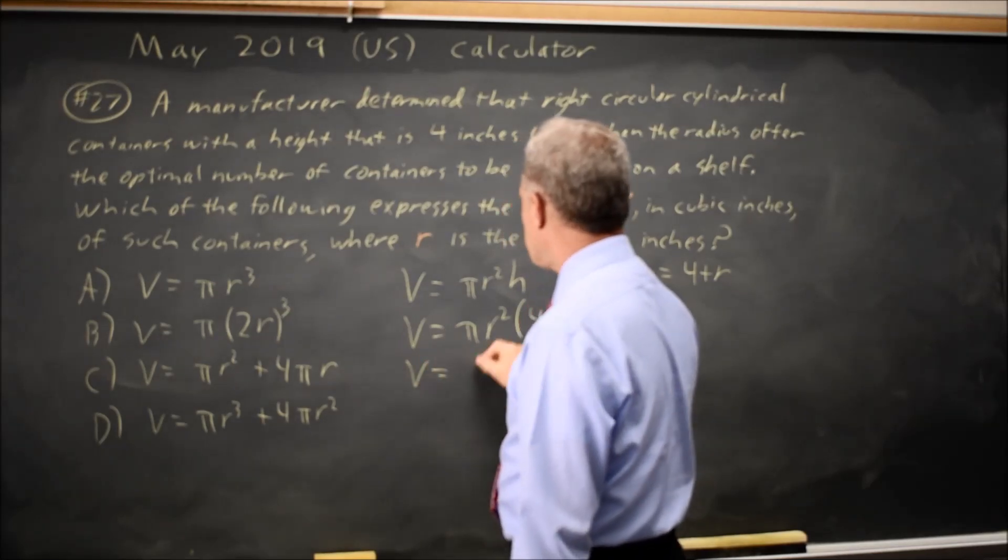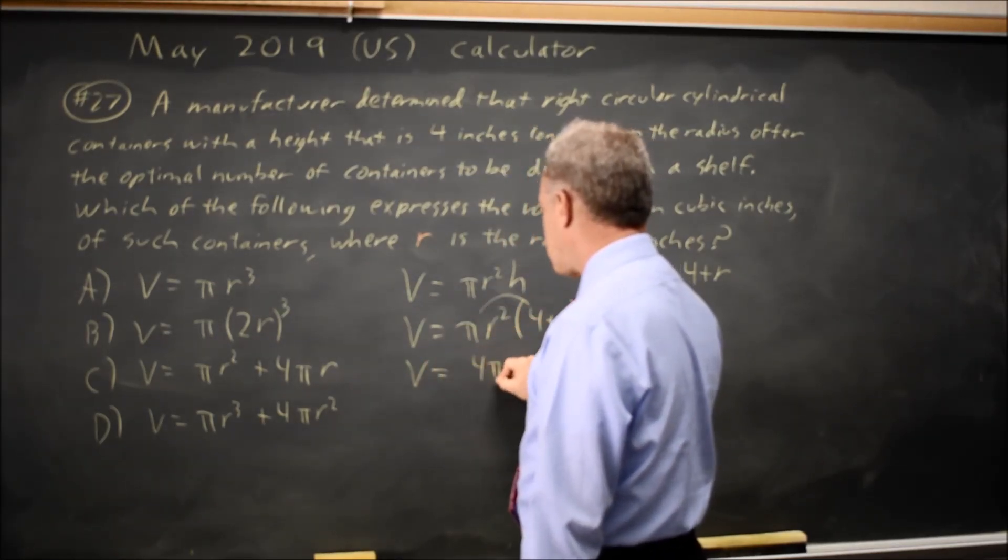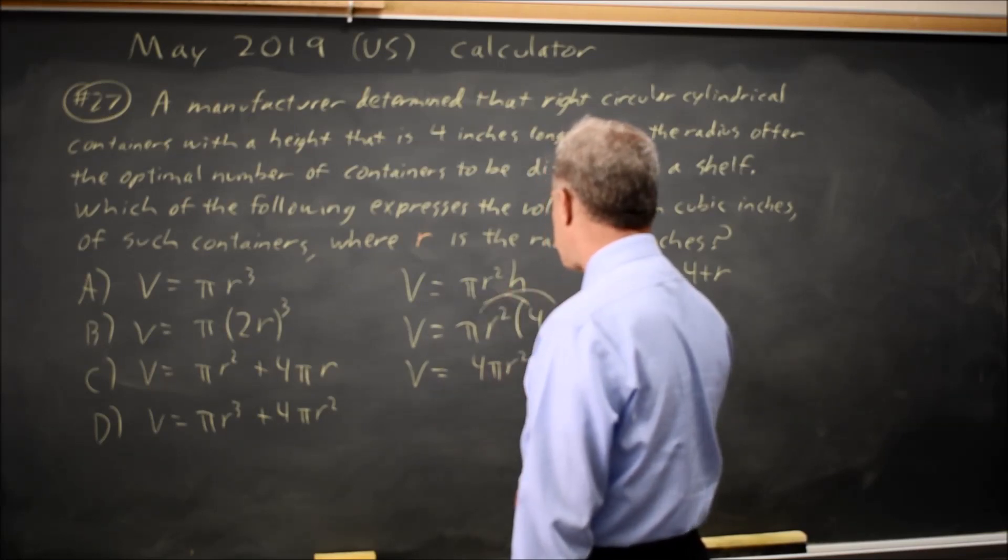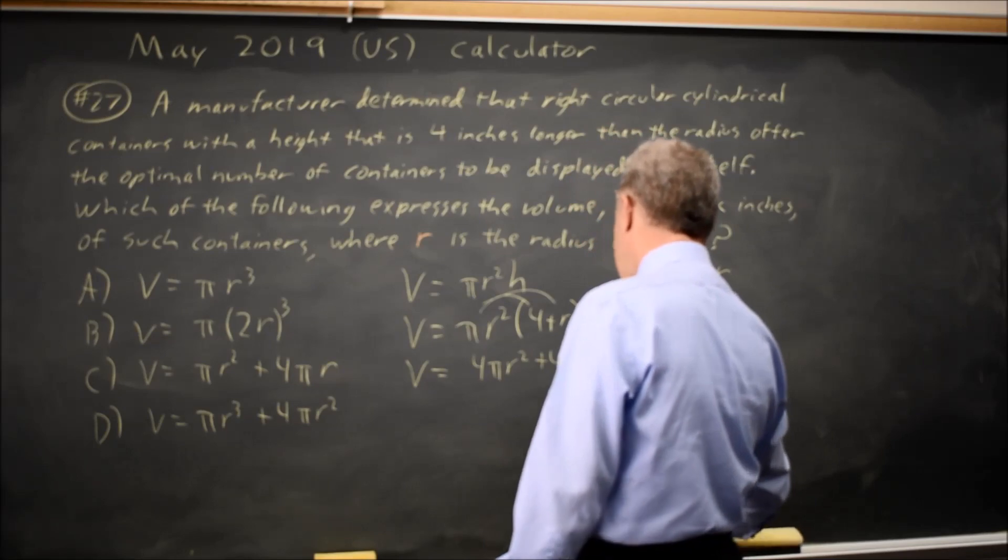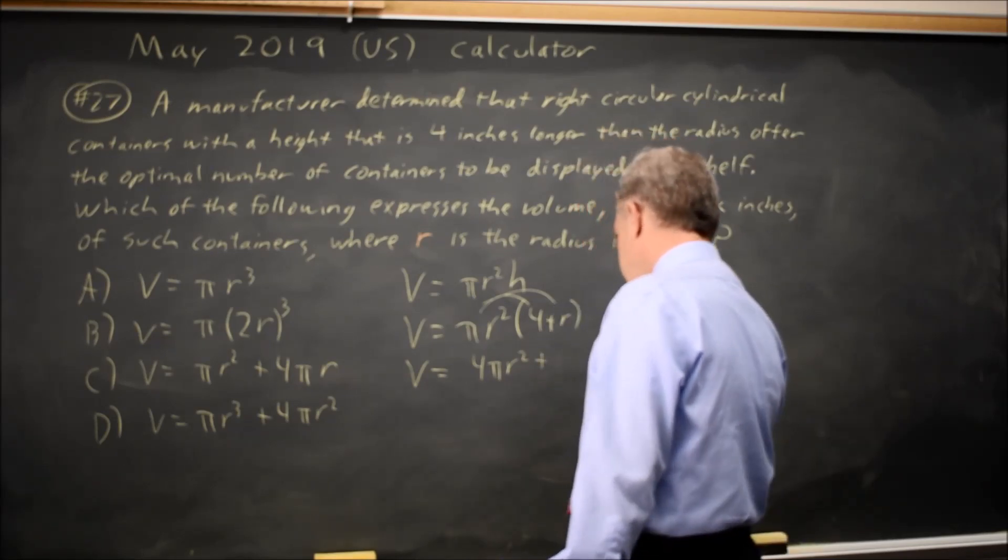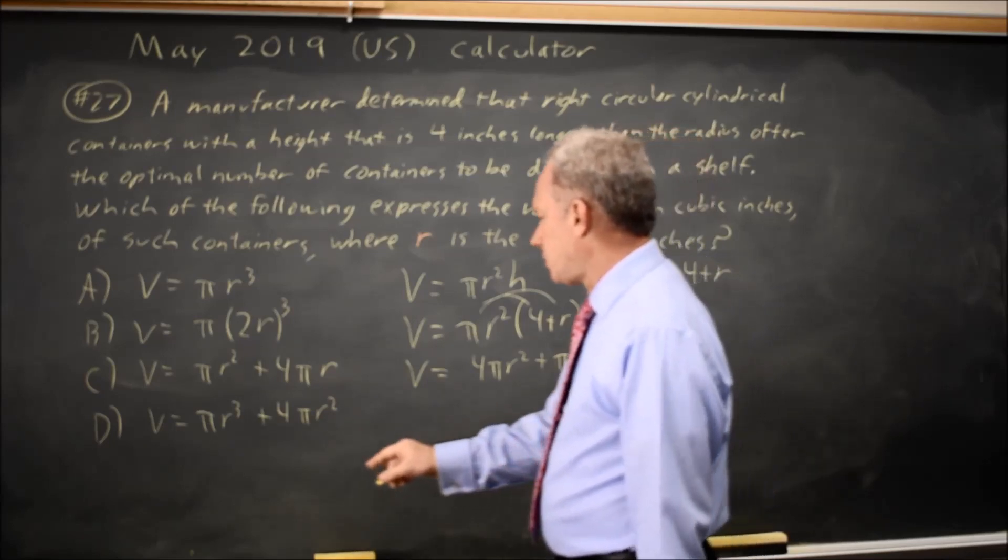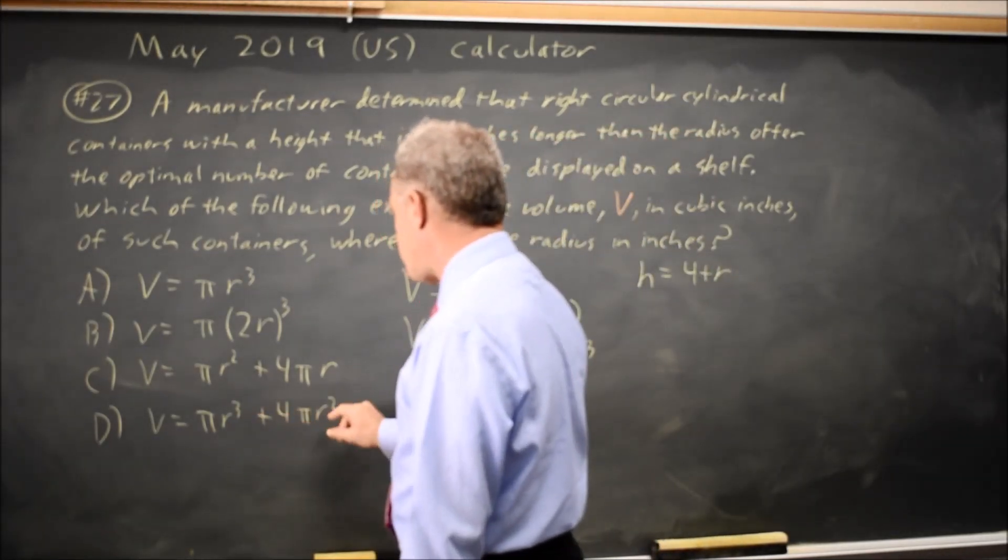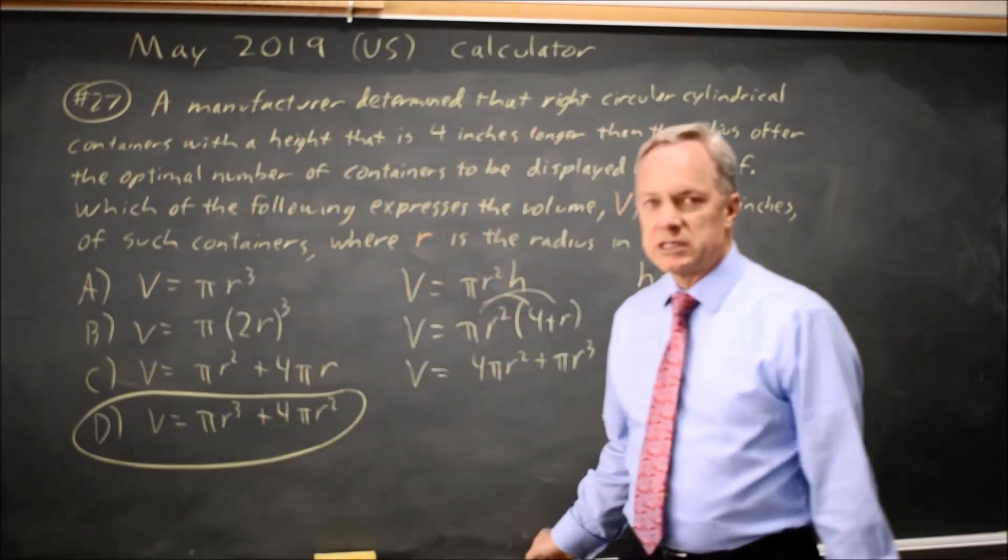Which is v equals, distributing πr² times 4 is 4πr², and then πr² times r is... not 4... πr² times r is πr³. So it's πr³ + 4πr², choice D.